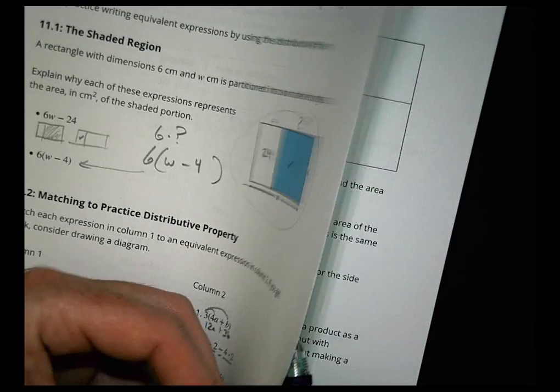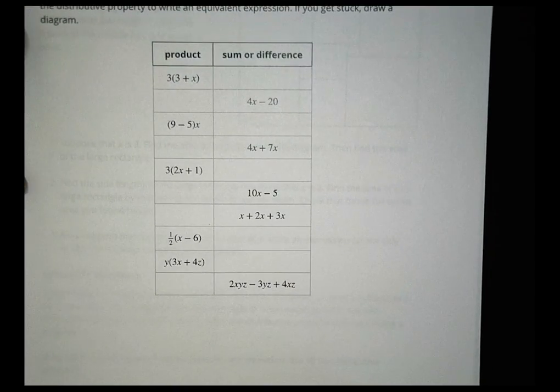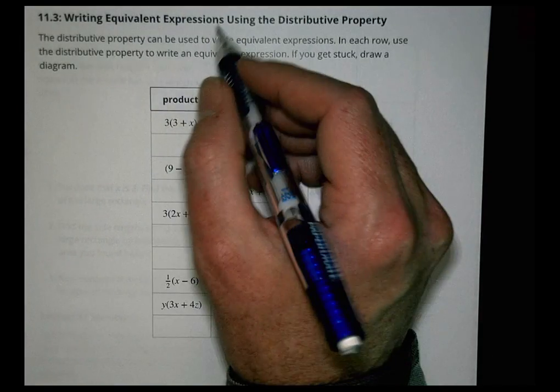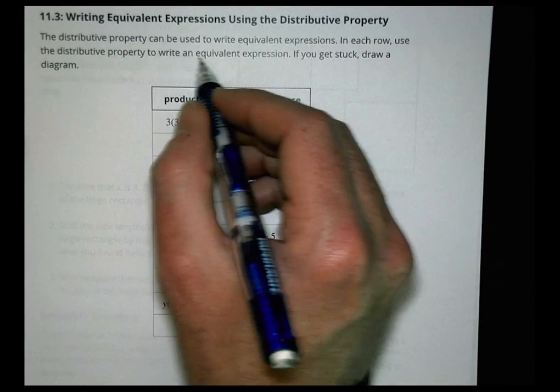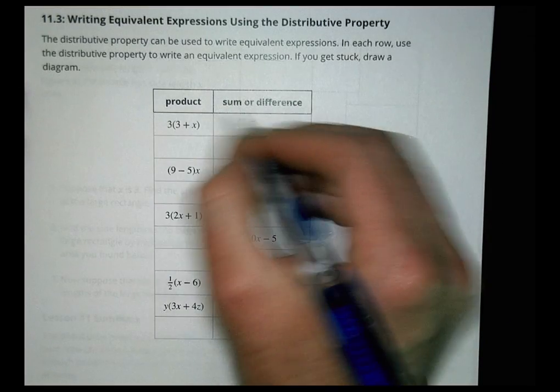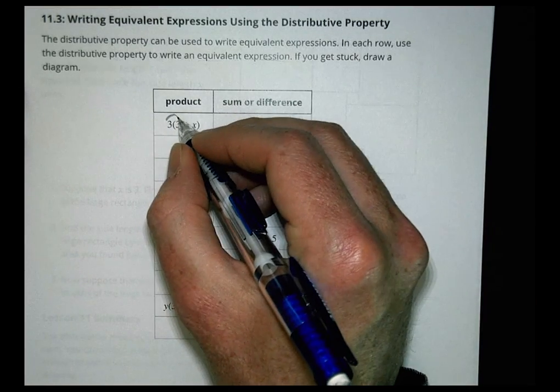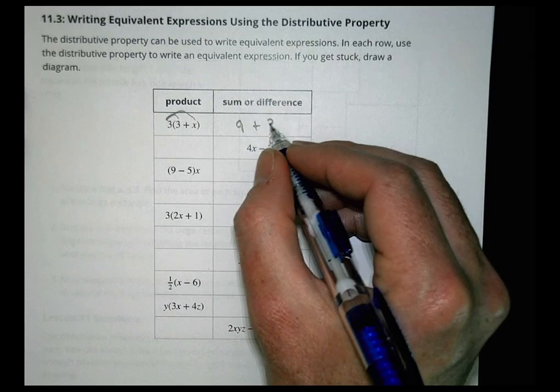Let's see what's on the next page. Use the distributive property to write equivalent expressions. In each row, use the property to write an equivalent expression. If you get stuck, draw a diagram.